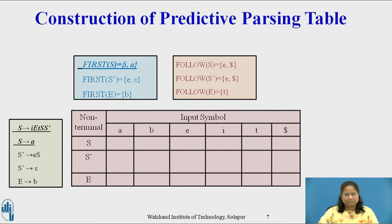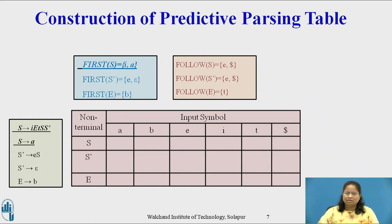Since First of capital S equals {small i, small a}, the production capital S derives small i, capital E, small t, capital S, S-dash, and capital S derives small a, causes M[capital S, small i] and M[capital S, small a] to acquire the entry capital S derives small i, capital E, small t, capital S, S-dash, and capital S derives small a, respectively.